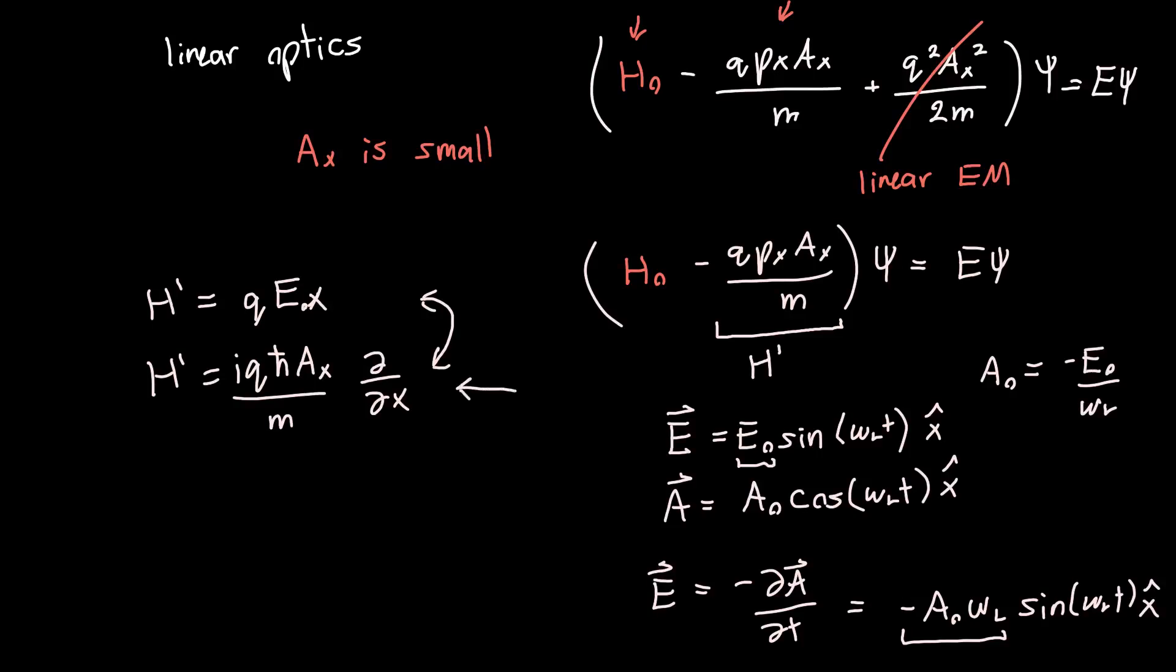And so now we can sub this back into the Schrodinger equation, or back into our perturbing Hamiltonian. And this whole part here is Aₓ, the x component, so we just swap that in here. We'll get that H' is just equal to iqℏE₀/(ωₗm) and now we've got our cosine there, so cos(ωₗt) d/dx.